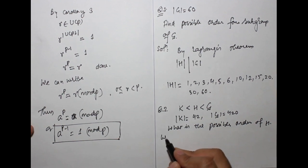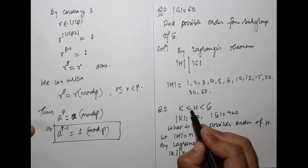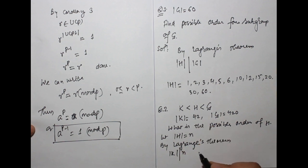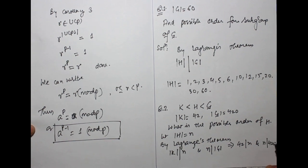Let order of H equals to n. So, by Lagrange, order of K should divide n, because this is the subgroup of H, and n should divide order of G. It implies order of K, 42, divides n, and here n divides 420.